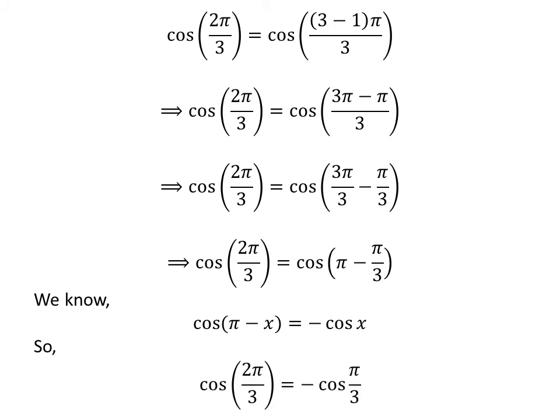Application of the above identity gives us cosine of 2 times pi upon 3 is equal to minus cosine of pi upon 3.